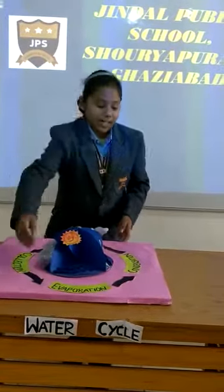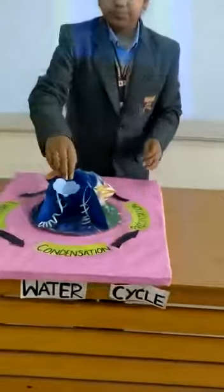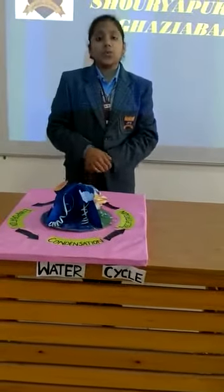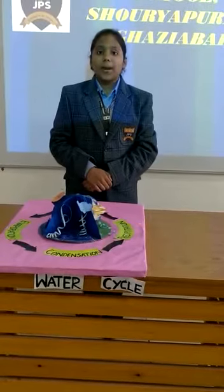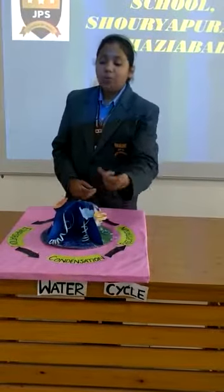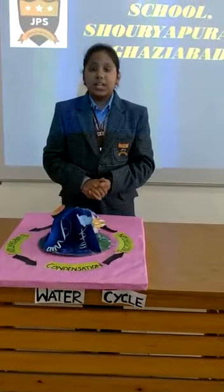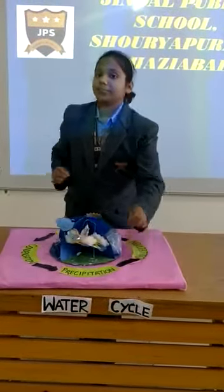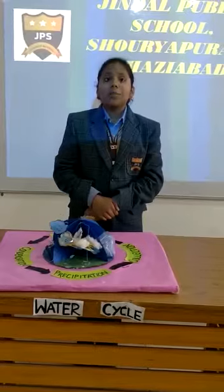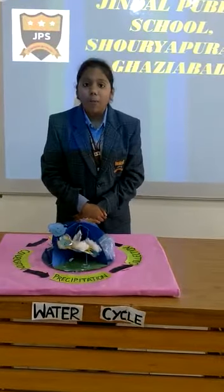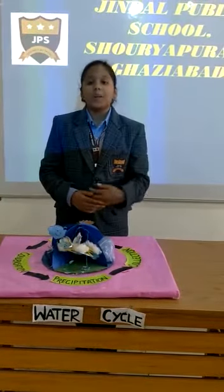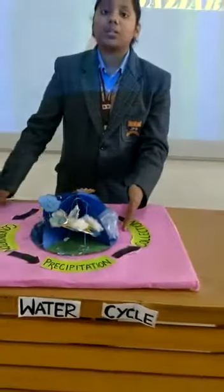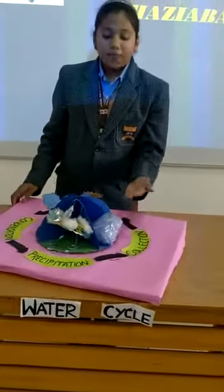Then the third part is condensation. When the gaseous cools down and turns back into liquid in the sky and forms clouds, it is called condensation. Then the last part is precipitation. Water droplets fall from the sky in the form of rain, it is called precipitation. Then through precipitation, the water comes back to the earth in the form of rain.